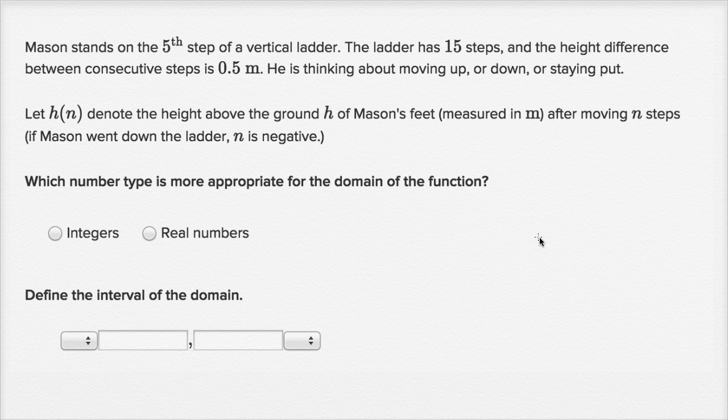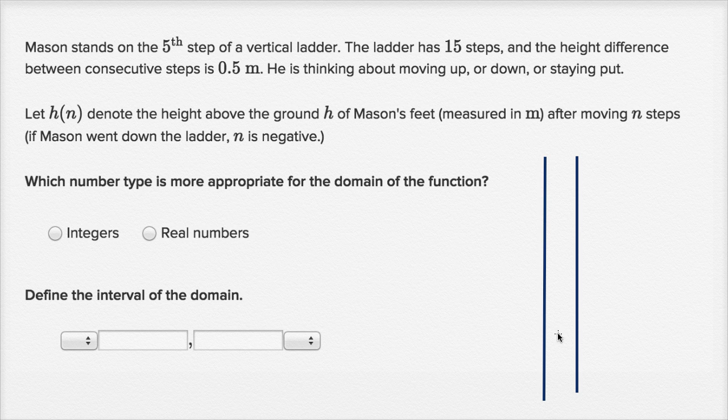So let me draw this ladder that Mason is on. It's a vertical ladder, so that's one side of the ladder, this is the other side of the ladder, and it has 15 steps. Let me see if I can draw that. Actually, I'm going to run out of space. I need to make them closer together. It's going to be one, two, three, four, five, six, seven, eight, nine, ten, eleven, twelve, thirteen, fourteen, and fifteen.